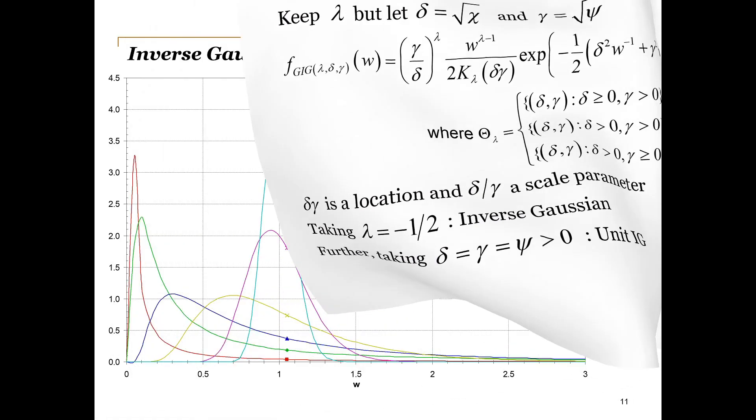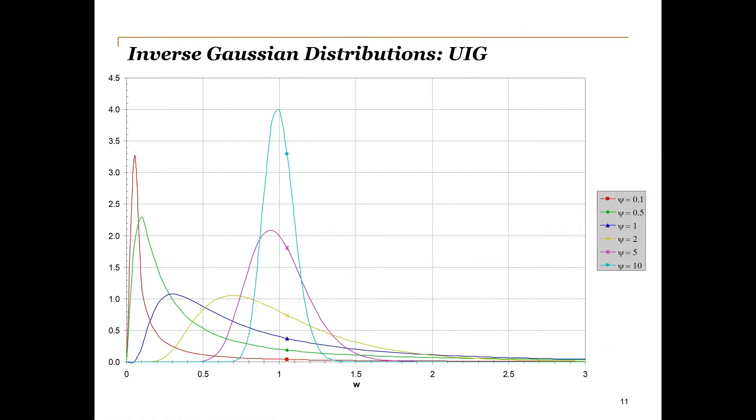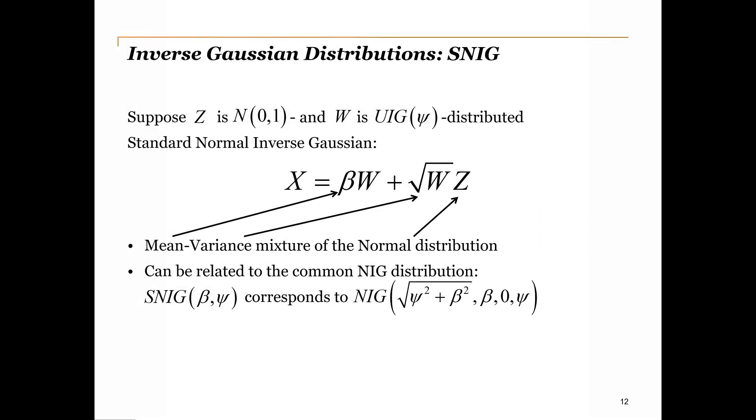This graph illustrates the possible shapes of the UIG distribution. The higher psi is, the closer the distribution is to a degenerate distribution with all its probability at 1. It is clear that the unit inverse Gaussian distribution is a candidate for modeling the higher peaks and heavier tails experienced in financial returns.